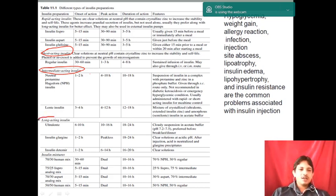Next is long acting insulin, that is Ultralente. The onset is 6 to 10 hours, peak action is 10 to 16 hours, and duration of action is 18 to 24 hours.